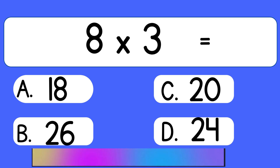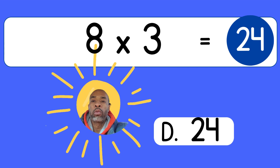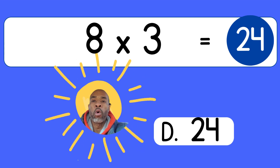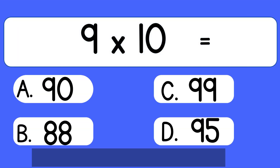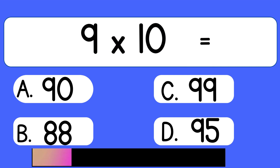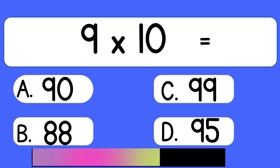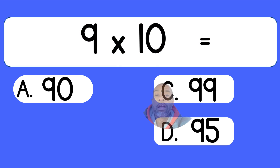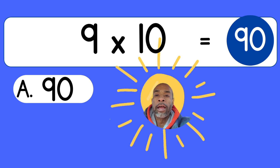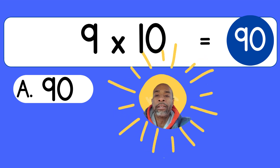8 times 3 equals 24. 9 times 10. 9 times 10 equals 90.